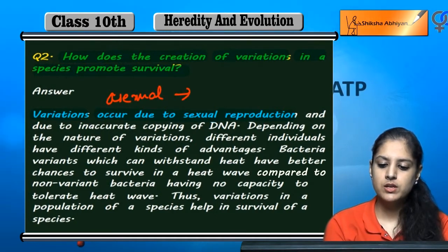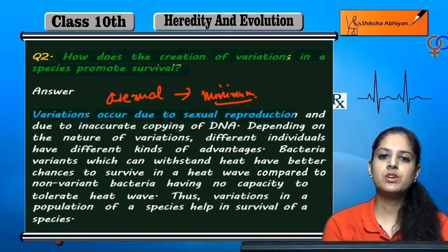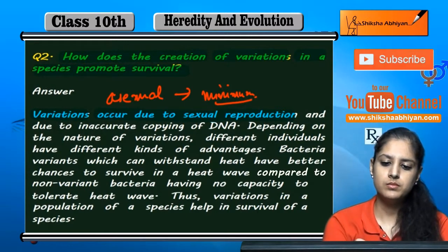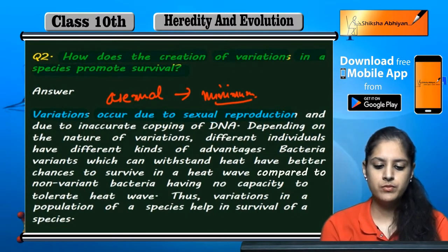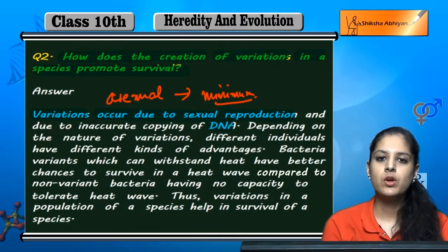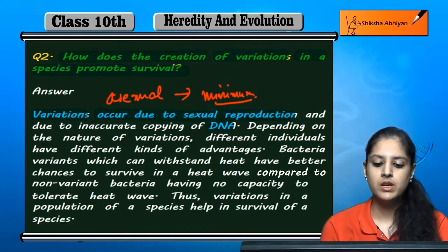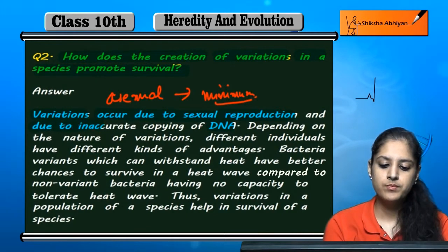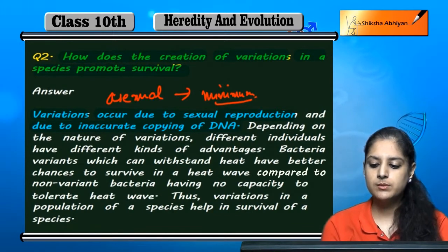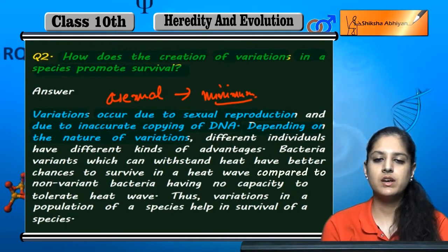The traits of the parent and offspring are almost the same, so variations are minimal. Variations come from sexual reproduction because the DNA is not properly copied. If DNA were accurately copied, offspring would be identical. So variation means there is inaccurate copying of DNA. Depending on the nature of variation, different types arise in each individual and every species.